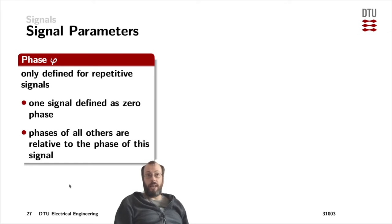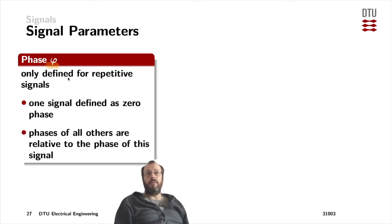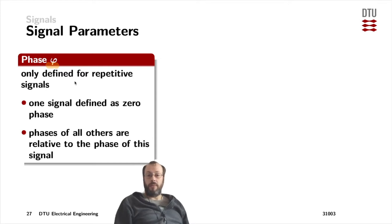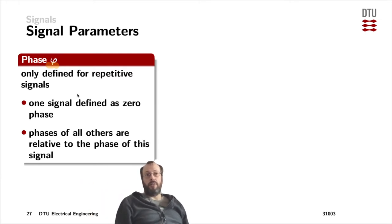Whereas the amplitude parameters we've just looked at are defined for any signals, the phase — phi, as it's often used as a Greek letter to describe it — is only defined for repetitive signals, that is, for periodic signals which have a period. Typically, we use an uppercase T for the period. You need to define one of your signals as the zero phase; it depends on where you define zero on your time axis, and then all other signals relate to that zero, offset in the positive or negative direction.